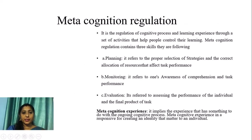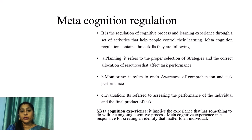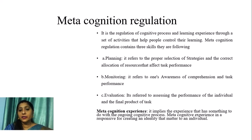Metacognitive regulation is the regulation of cognitive processes and learning experience through a set of activities that help people control their learning. It contains three skills: planning, monitoring, and evaluation. Planning refers to the proper selection of strategies and correct allocation of resources that affect task performance. Monitoring refers to one's awareness of comprehension and task performance. Evaluation refers to assessing the performance of the individual and the final product of a task.